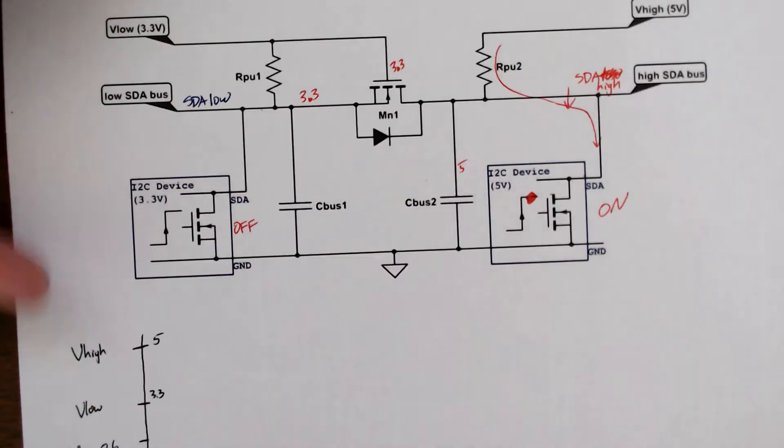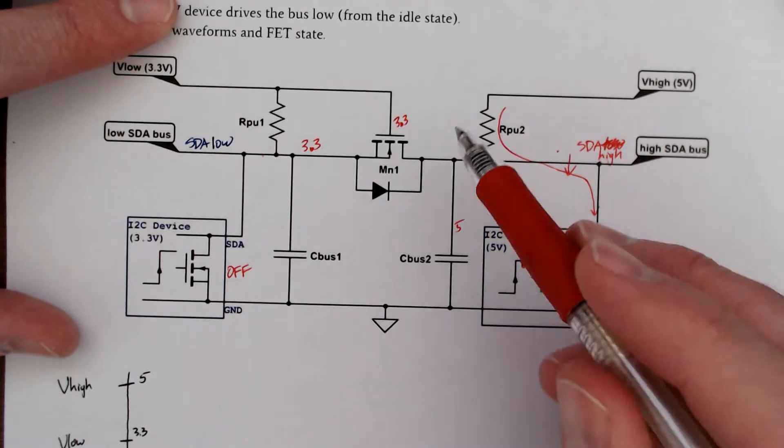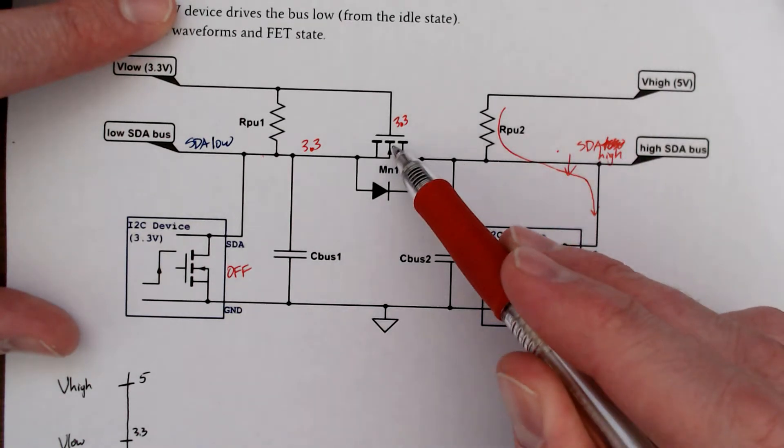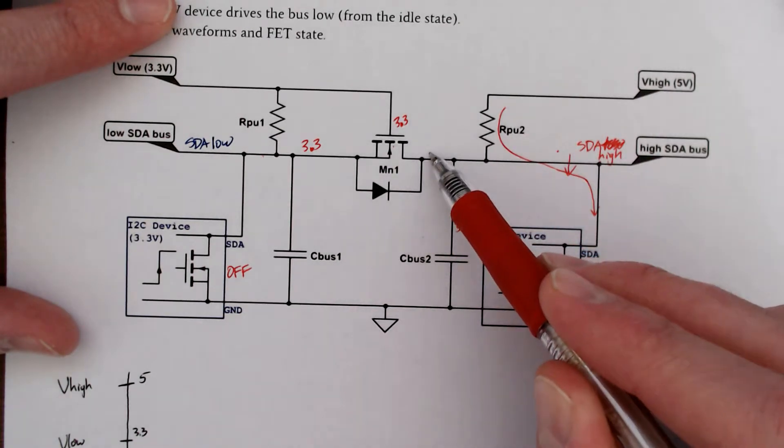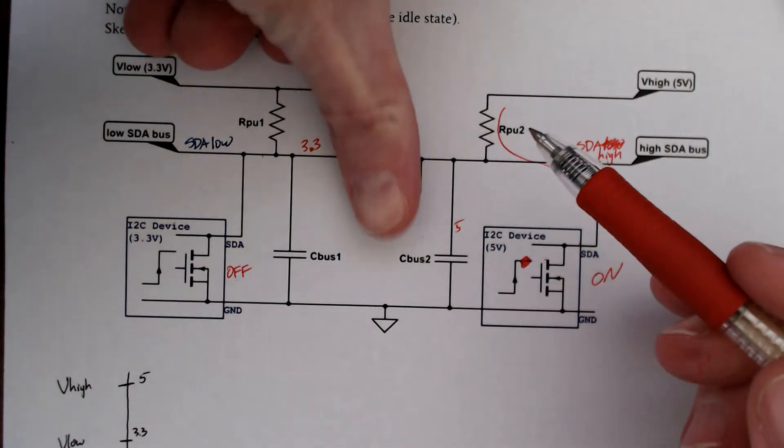Right now, we're going to look at just the right side of our circuit here. At this moment, this transistor is off. The drain is 5 volts, but the gate-to-source voltage is 0. This transistor is off.